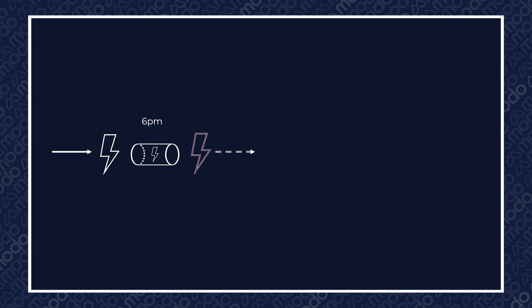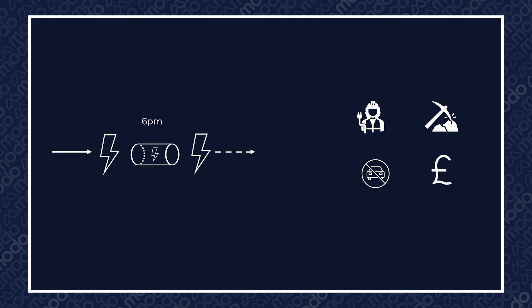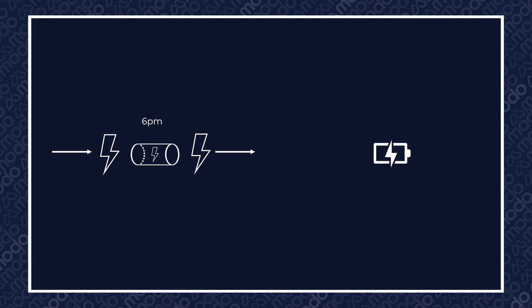To stop the peak demand exceeding the available capacity, a source of local flexibility can be dispatched to reduce the peak demand to 750 megawatts — in this case it's a battery which charges up when demand is low, overnight. By calling on a local source of flexibility to shift energy consumption away from peak times, network power constraints are respected, which means no transformers going bang. This also means costly and inconvenient network reinforcements aren't necessary, so nobody has to start digging up your local high street.